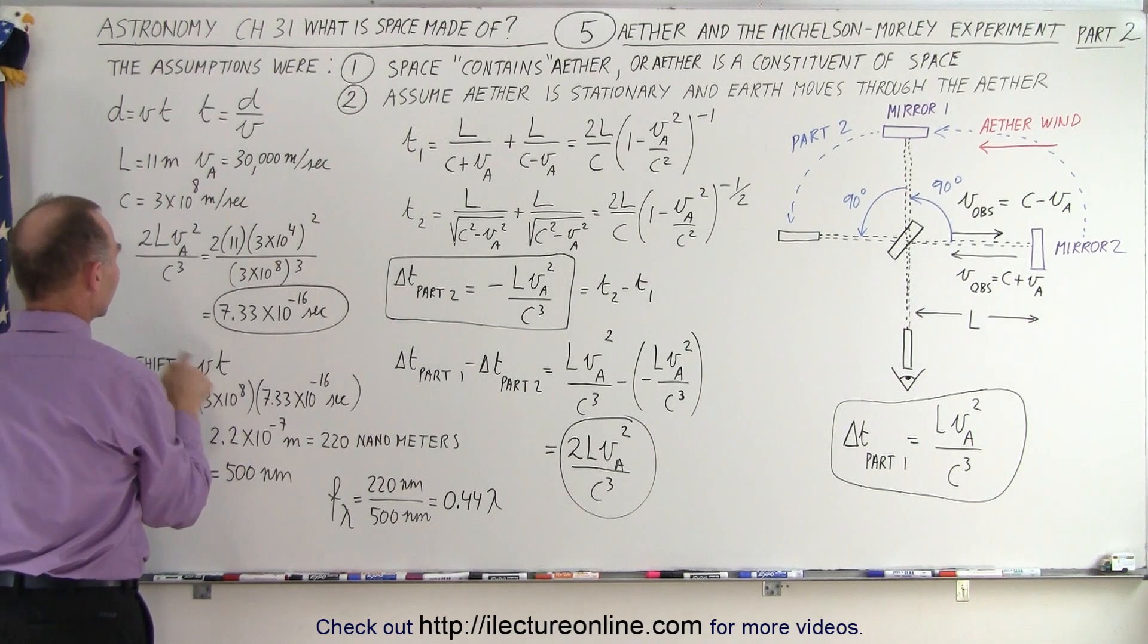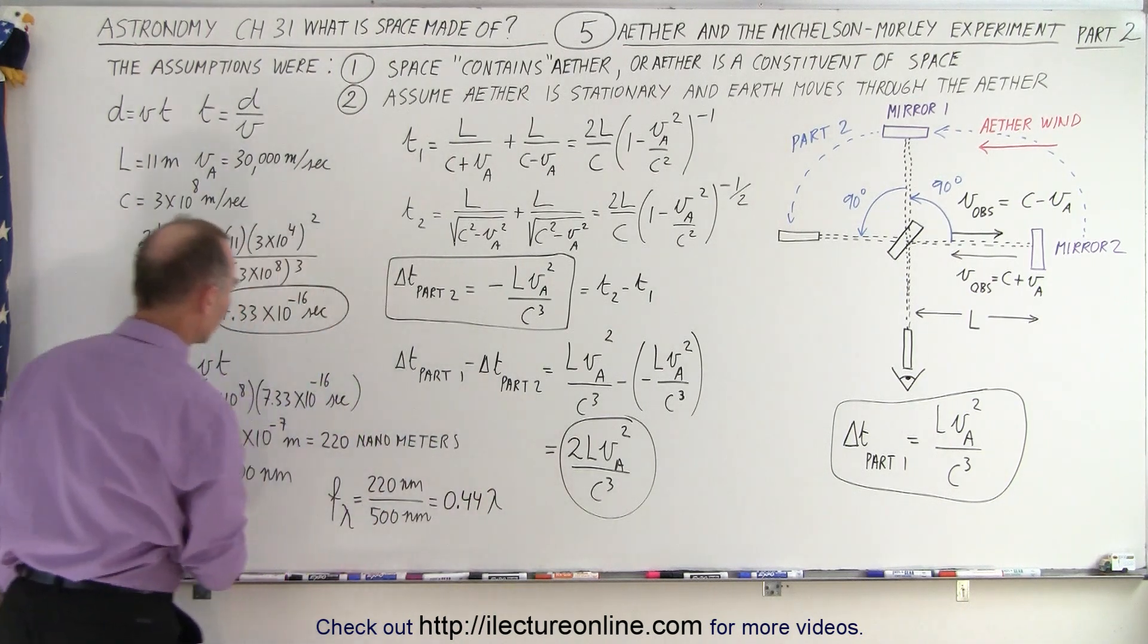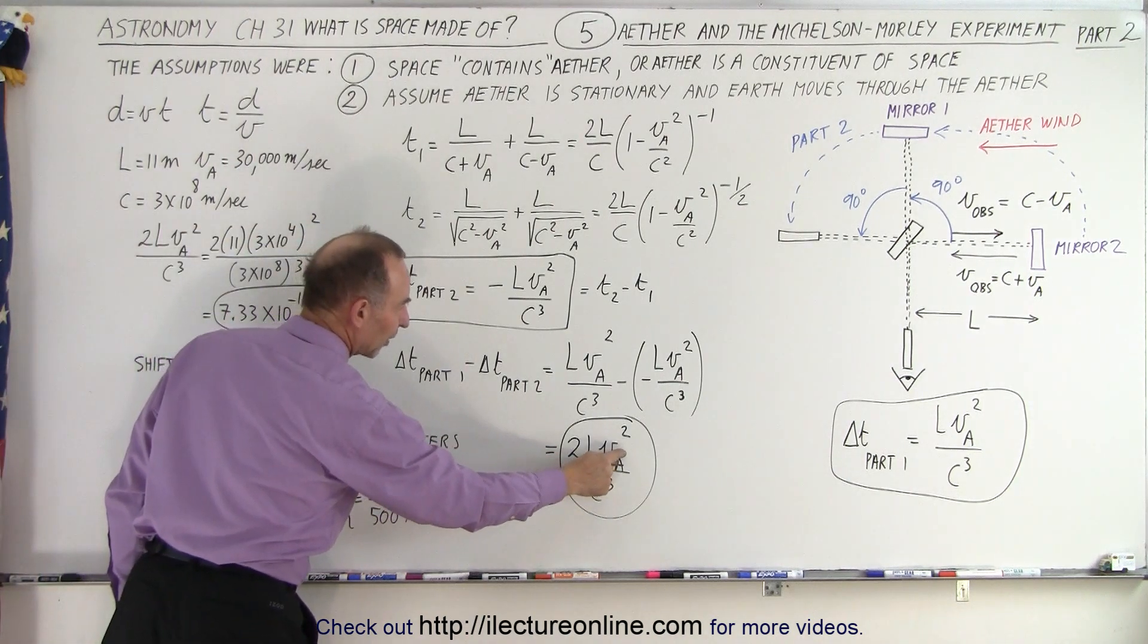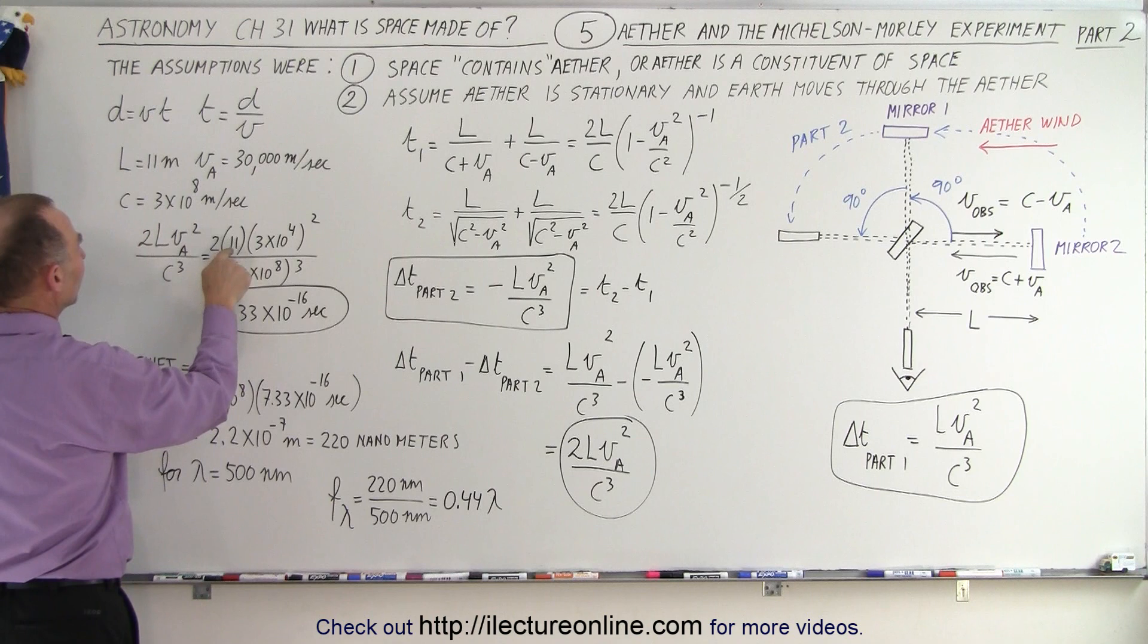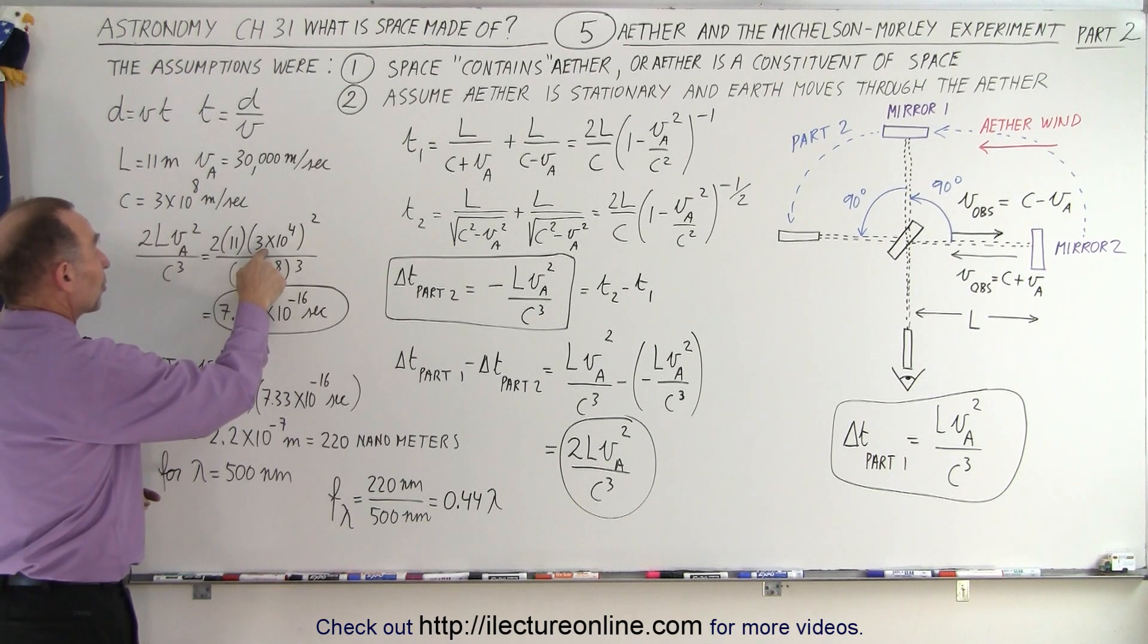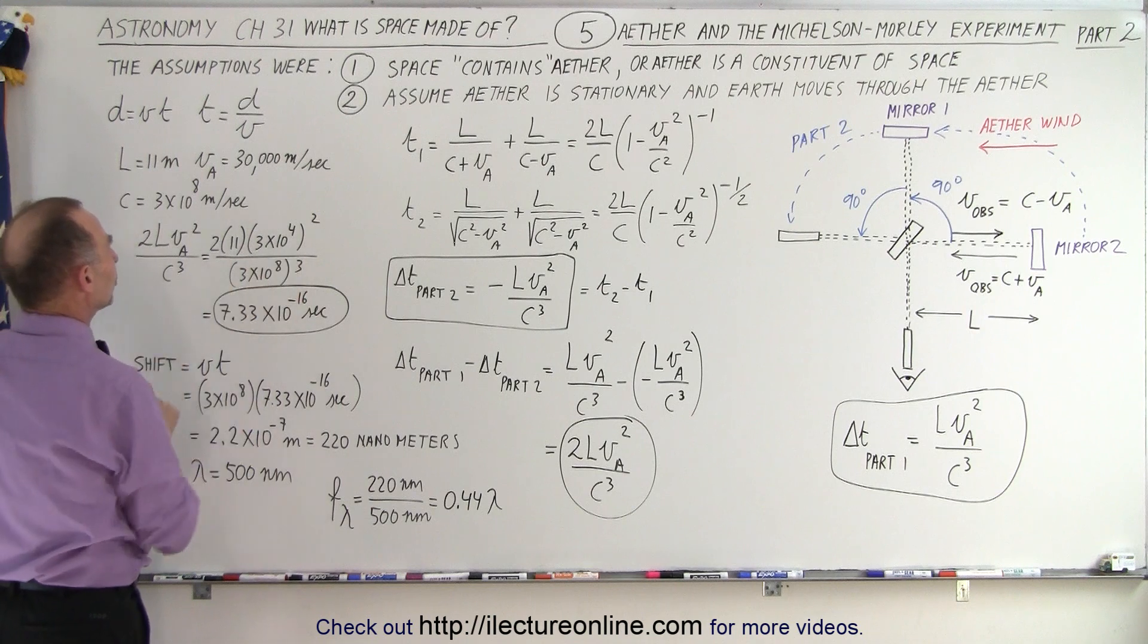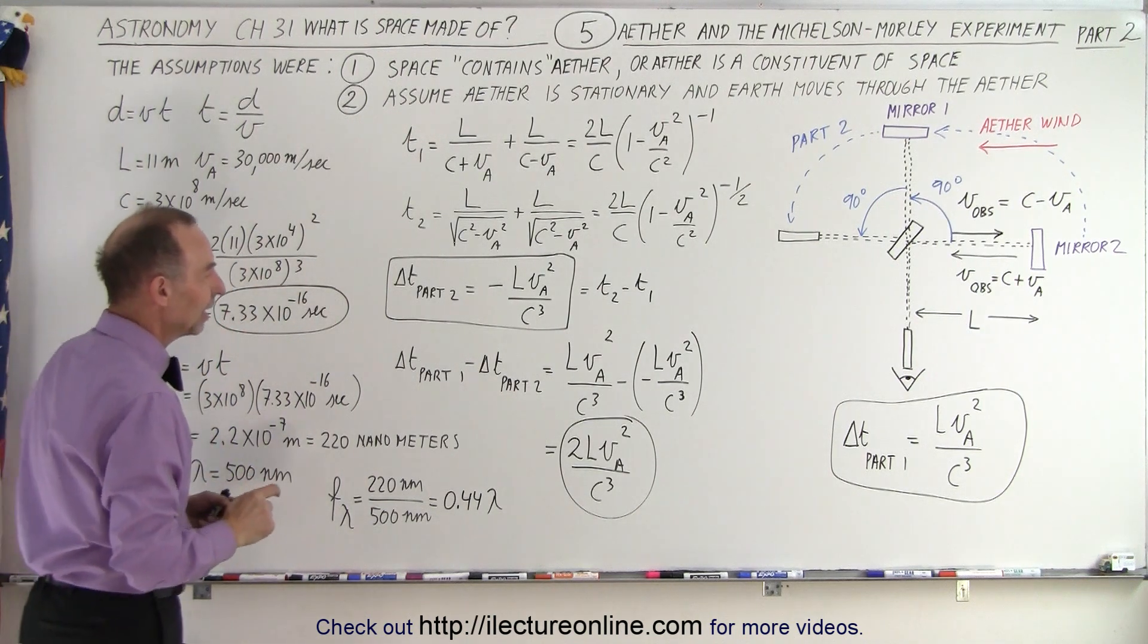Now we know that distance equals velocity times time, so the shift is equal to the velocity times time. The time here is going to be the delta t between the two. When we take the difference, which is 2L times the velocity of the ether divided by the speed of light cubed, when L is 11 meters, the velocity of the earth, which then of course would be the velocity of the ether, is 30 kilometers per second or 3 times 10 to the fourth. We have to square that and then the velocity of light cubed.